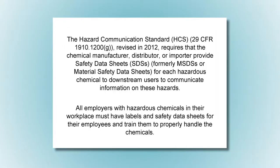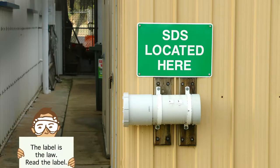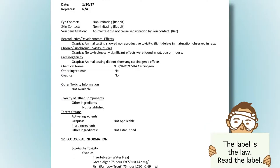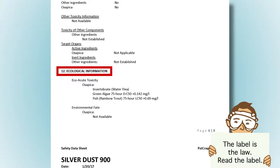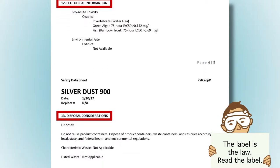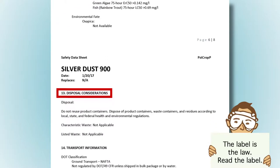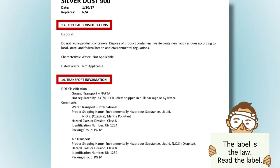Occupational Safety and Health Administration, or OSHA, requires that employers provide access to SDSs and keep copies in multiple locations. An SDS includes more technical information for selecting greener products. Sections 12, 13, 14, and 15 are optional.